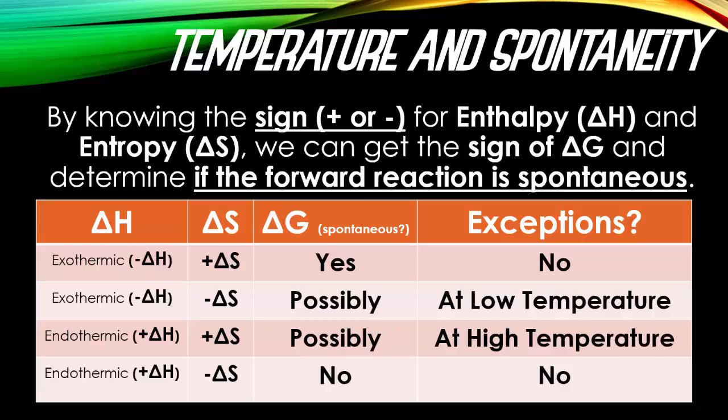Looking at this chart — which I highly recommend you copy down because it makes life much easier — whenever you have an exothermic reaction with a loss of heat and an increase in entropy, that will be a spontaneous reaction. If you have an exothermic reaction with a loss in entropy, you could possibly be spontaneous, but only at a very low temperature. An endothermic reaction with a gain in entropy could be spontaneous, but only at high temperature. If you're gaining heat and losing entropy, you will not be spontaneous at all.